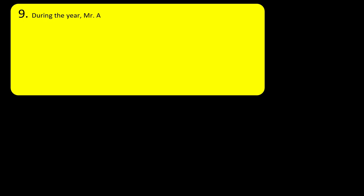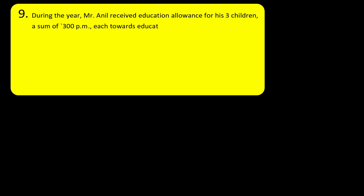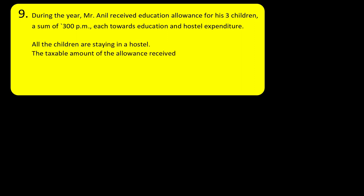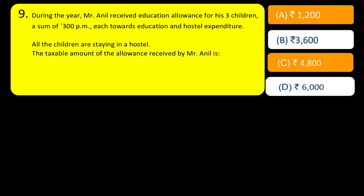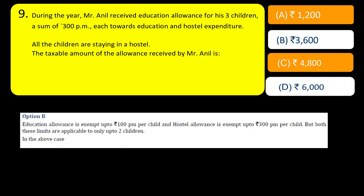Question 9: During the year, Mr. Anil received education allowance for his three children — Rs. 300 per month each towards education and hostel expenditure. All children are staying in a hostel. Children's Education Allowance and hostel allowance are exempt for a maximum of two children only. The third child's allowance is fully taxable — Rs. 300 into 12 = Rs. 3,600. The answer is B.